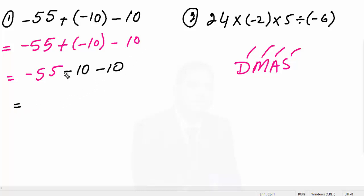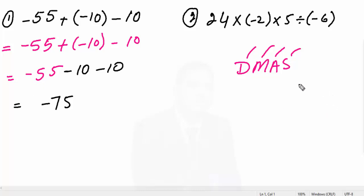Now we have 10 minus, minus 10, minus 55 — we combine all of these. The digit values are 5, 1, 1, 2, 2 and 5, 7, and all these are minus values, so the result will be minus 75. The answer is minus 75. We have one more question which we will do next.